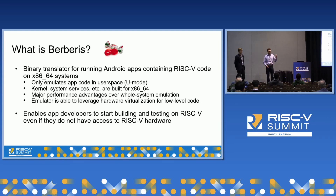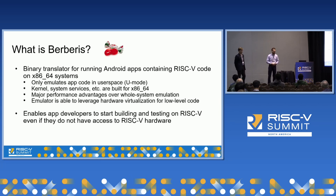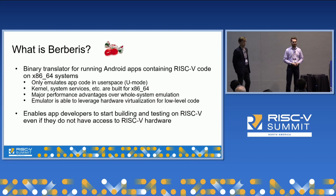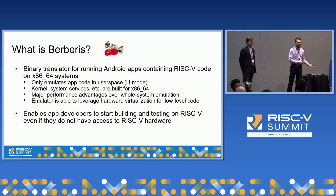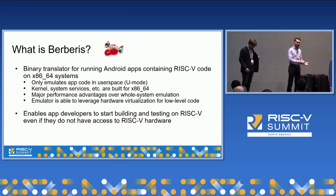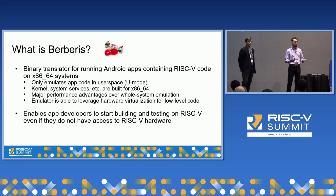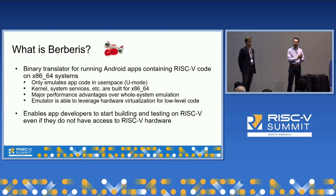Berberus is another word for Barbary. More technically, Berberus is a way for us to run Android apps that contain native RISC-V code on an x86 system. We do that by only translating the user space code inside of the app — RISC-V U mode — while the kernel, system services, and Android runtime are all built for x86. Because they're built for x86 and running on x86, we can leverage hardware virtualization to get native or near-native performance out of 99% of the operating system while we just focus on that last 1%.